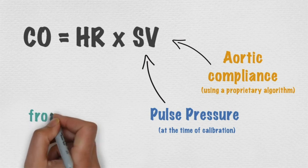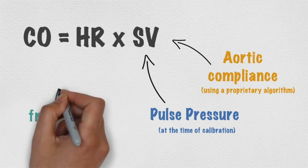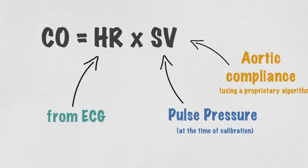Stroke volume is then multiplied by heart rate, determined from the ECG electrodes, to calculate cardiac output.